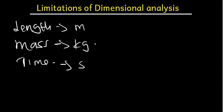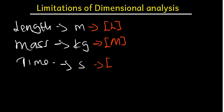Whenever you see a question asking about dimensions, they want us to replace the units with dimensional notation. For meters, we replace with square brackets and put L for length. For kilograms, we use square brackets and put capital M. For seconds, we represent time with square brackets and T. This is the first limitation — it is only applicable to length, mass, and time.